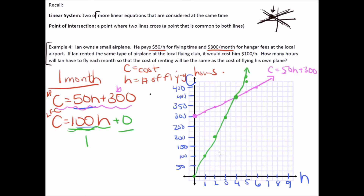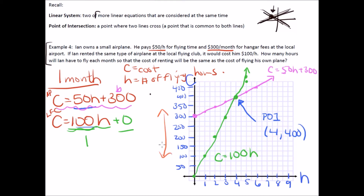Connect the green line with a ruler — that's C equals 100H. We're looking for how many hours Ian flies so costs are equal. At the point of intersection, the cost is $400 and the number of hours is four. So the point of intersection is (4, 400). Therefore, at four hours the cost will be the same at $400. Analyzing: less than four hours, the green line (flying club) is more beneficial; over four hours, the purple line (airport) is more beneficial.